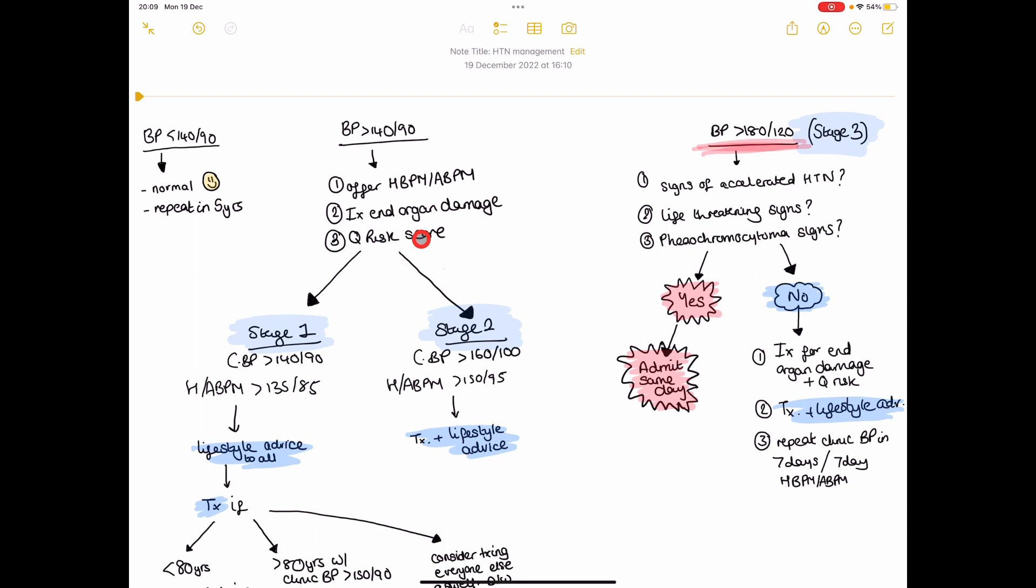So you're doing all of that and the patient comes back and we've got confirmation that the blood pressure is more than 140 over 90. So that would be on the home blood pressure monitoring, ambulatory blood pressure monitoring.